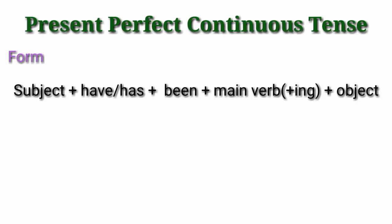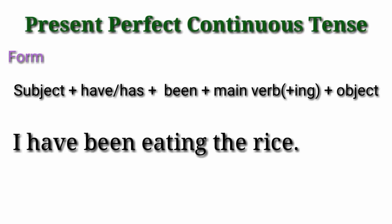For example: 'I have eaten the rice' or 'I have been eating the rice.' This relates to the present perfect tense. The present perfect expresses an action that has been completed with relevance to the present.